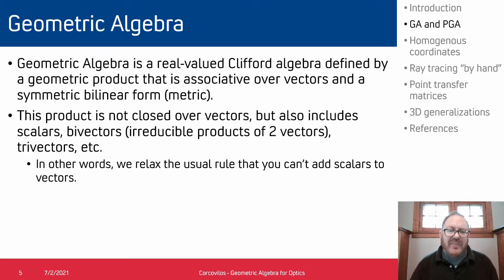So geometric algebra is a real-valued Clifford algebra that's defined by a geometric product that is associative over vectors and a symmetric bilinear form, in other words a metric. So that's a lot of math speak, but one of the key results is that the product itself is not closed over vectors. So in other words you can multiply two vectors together and get something else—you may get a vector but you may also get a scalar piece or a bivector piece, etc. And so in other words we relax our usual rule that you can't add scalars to vectors and we allow these more composite objects to be valid pieces of our math.